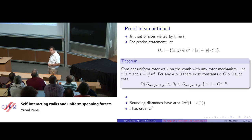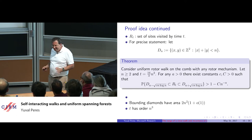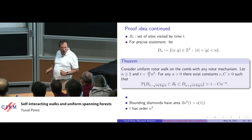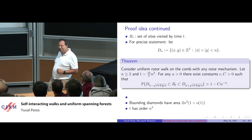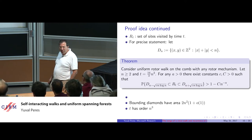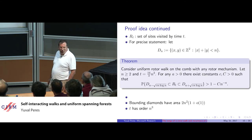One conjecture of Priezzhev et al. is that the asymptotic shape in the plane is a ball. This is not at all clear from the simulations; the longer the simulations, it looks a little more like a ball, but it's never very convincing.